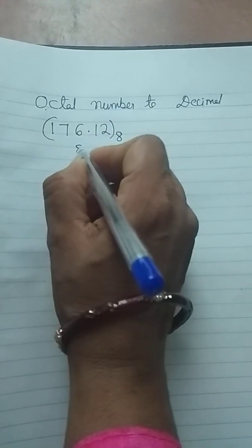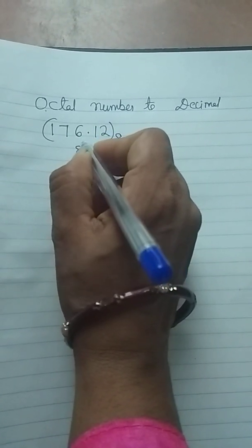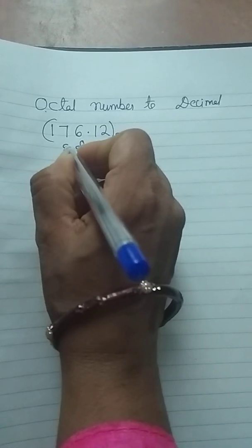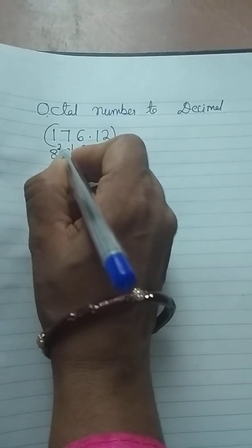We have to multiply 6 into 8 to the power of 0, 7 into 8 to the power of 1, 1 into 8 to the power of 2.